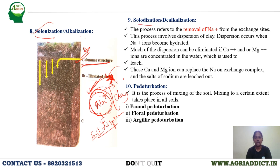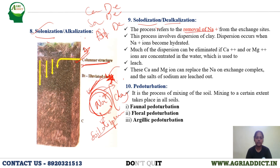Next is solodization (de-alkalization) — the reverse of alkalization — which involves removal of sodium. Sodium is removed when replaced with other ions, usually calcium, such as by adding gypsum — the same principle used in reclaiming alkali soils. Please take care of the terminology: solonization means alkalization, and solodization means de-alkalization.